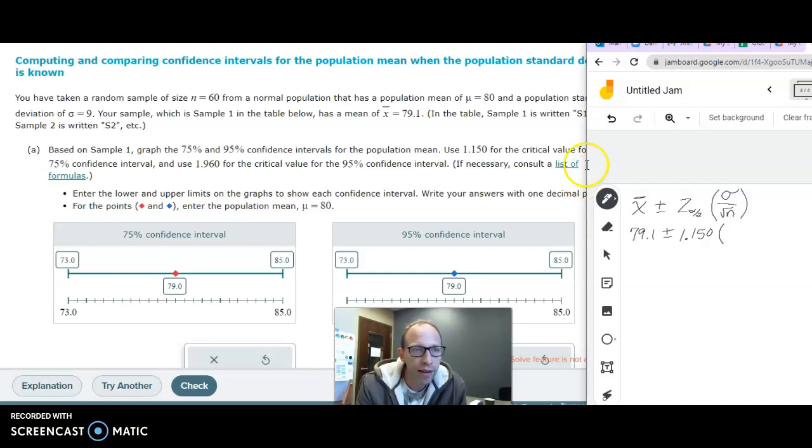And then we need to calculate the standard error here. So this is the 9, it's the sigma, over the square root of the sample size, and it's size 60. So this part here is called the error, and if we type that into a calculator really quickly, should get 1.336. And then we're going to add and subtract that from the 79.1, so let me do that as well.